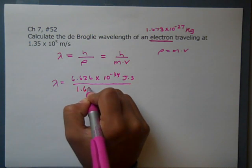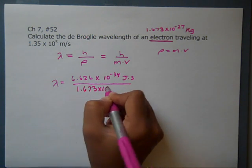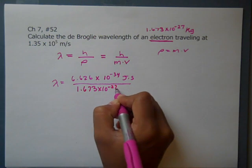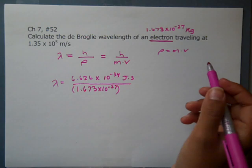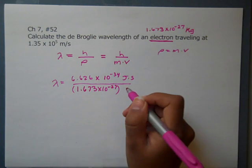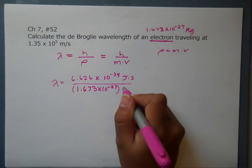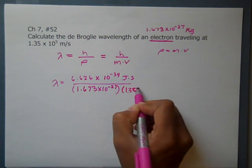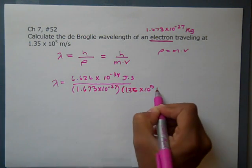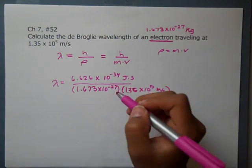Our mass is, remember, a constant for an electron. And remember, you can look up masses for protons as well, and neutrons if you need to. That's 1.673 times 10 to the negative 27 kilograms over our velocity of 1.35 times 10 to the fifth meters per second.